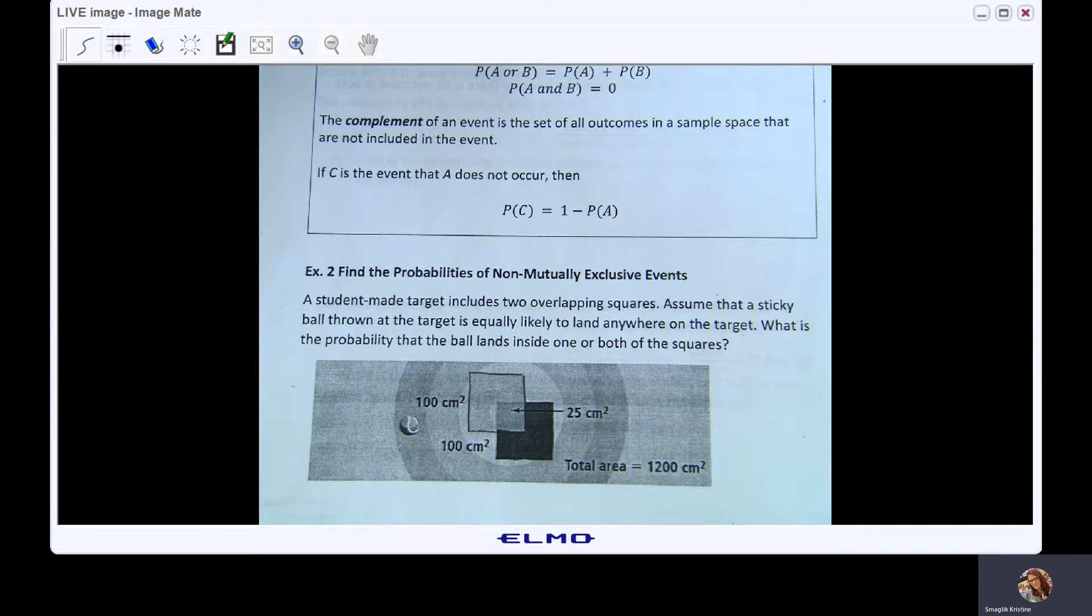A student-made target includes two overlapping squares. Assume that a sticky ball thrown at the target is equally likely to land anywhere on the target. What is the probability that the ball lands inside one or both of the squares?